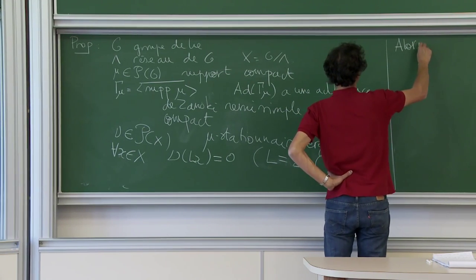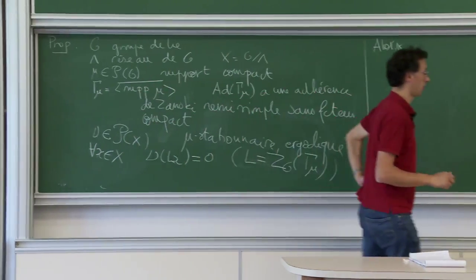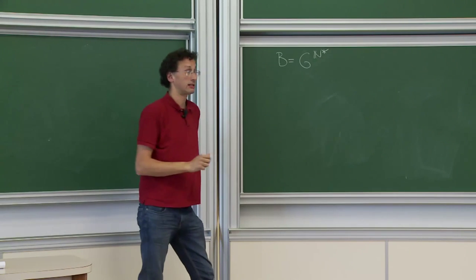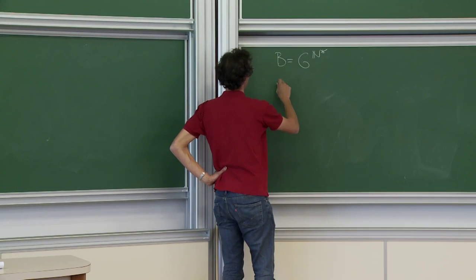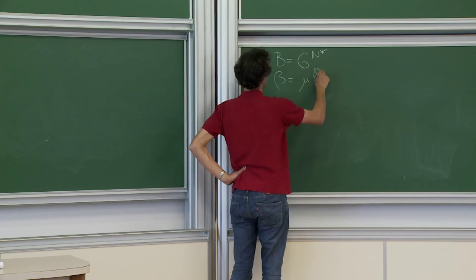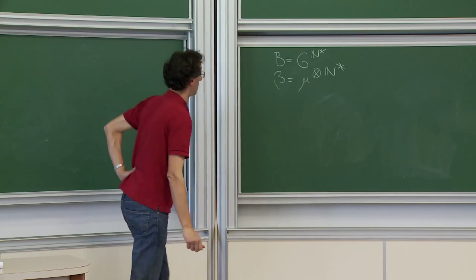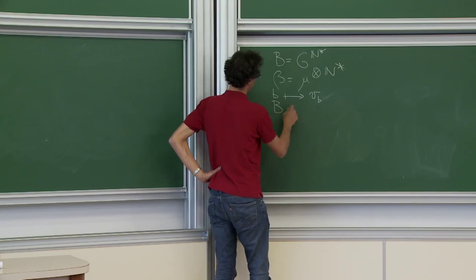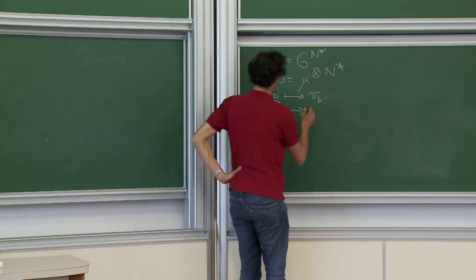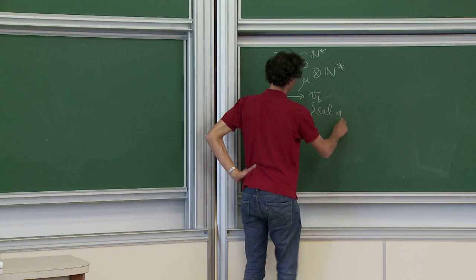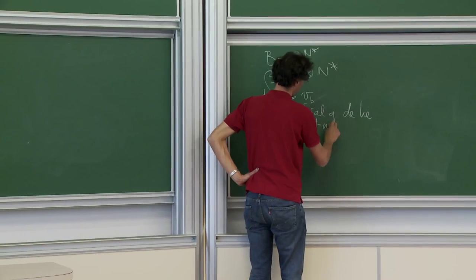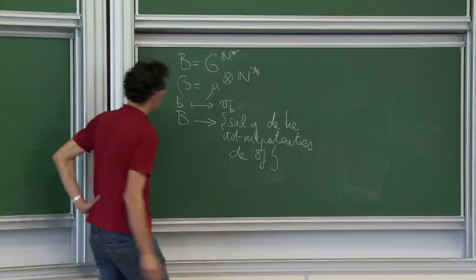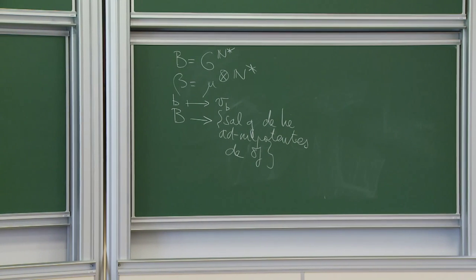Je vous rappelle que j'ai associé à cette situation B — je note toujours B — qui est l'espace des suites indexées par les éléments de G, à coefficients dans G, avec bêta la mesure produit sur cet espace. J'ai noté aussi une application qui va de B dans les sous-algèbres nilpotentes de l'algèbre de Lie de G, définie comme étant l'espace qui apparaît dans le théorème de Furstenberg — la somme des espaces qui apparaissent dans chaque composante irréductible non triviale pour l'action de Gamma_mu.